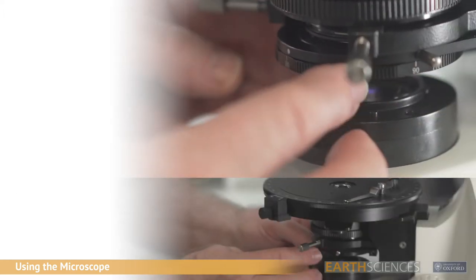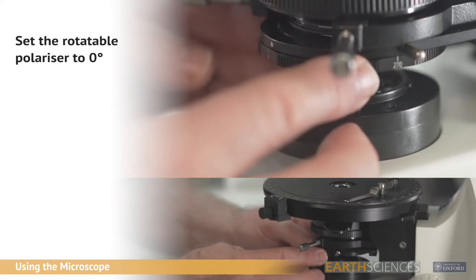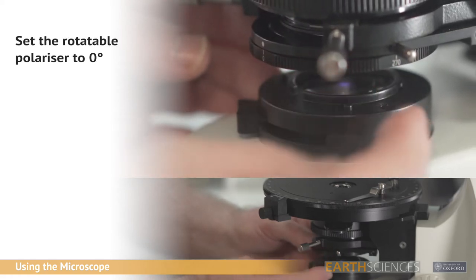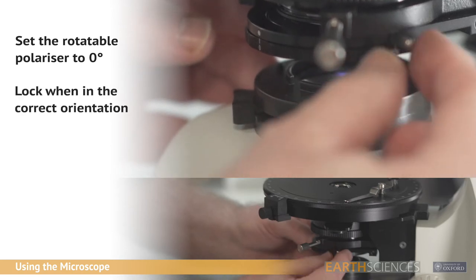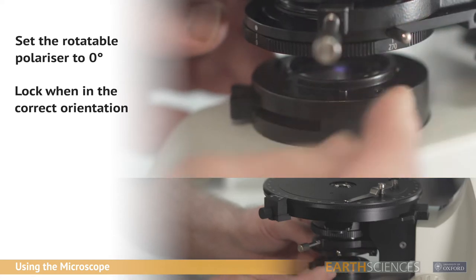Under the sub-stage condenser is the swing in-out rotatable polariser. This is marked with 0, 90, 180 and 270 degrees. Ensure that this is in the 0 degree position at the start of use. There is a silver locking screw to the right hand side.